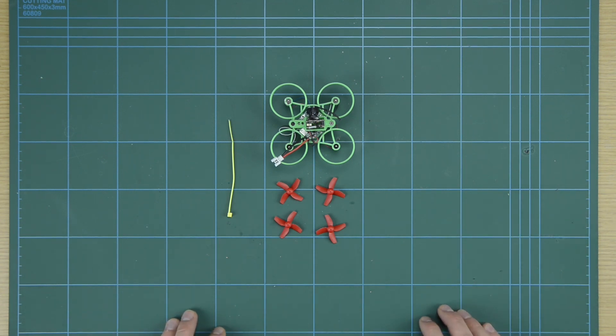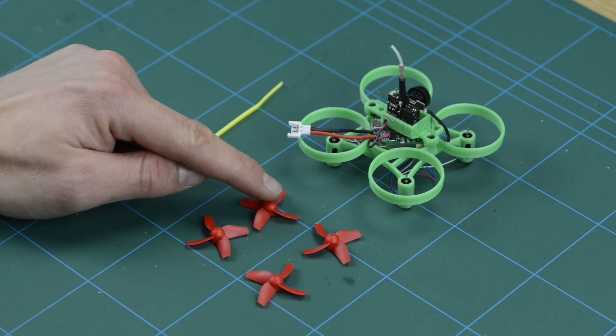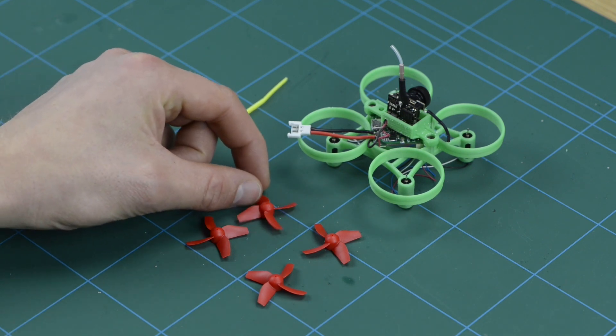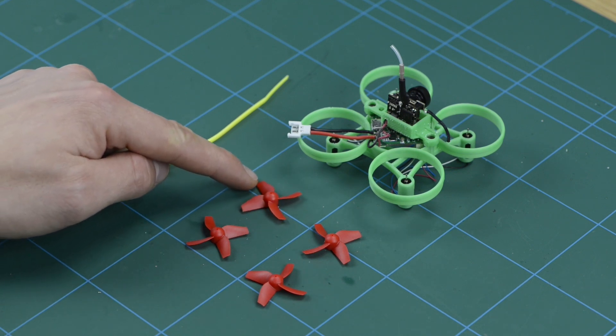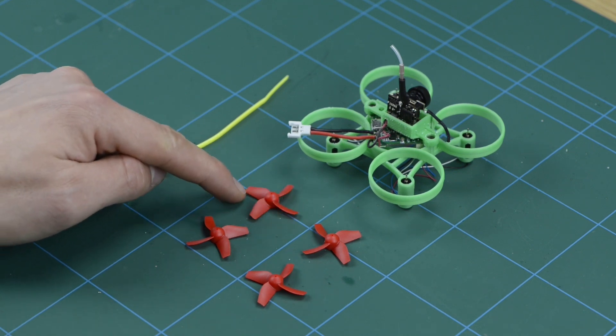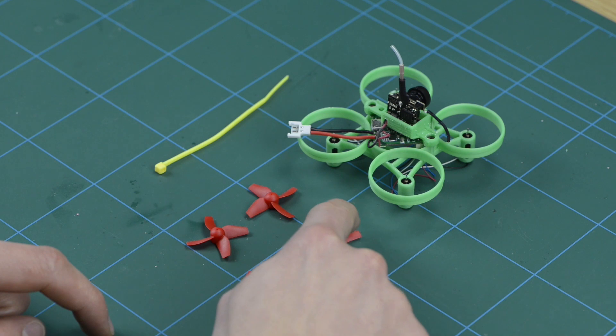So firstly, you need to identify in your propeller set which is a clockwise and which is counterclockwise. And the way to do this is to look for the curved leading edge, and the curved leading edge is at the front of the direction of travel. So you can see this one has the curved edge on this edge, and so this is a clockwise propeller. And this one has the curved edge on this side, so that's a counterclockwise propeller.